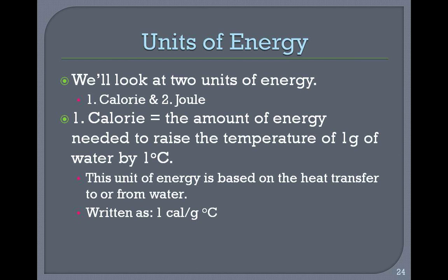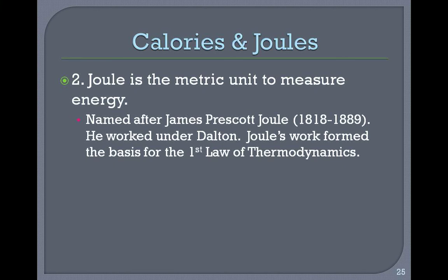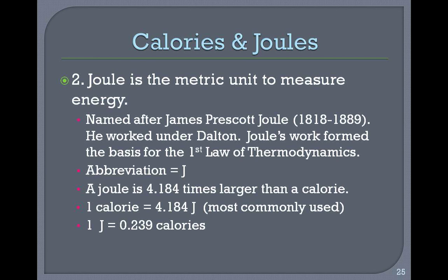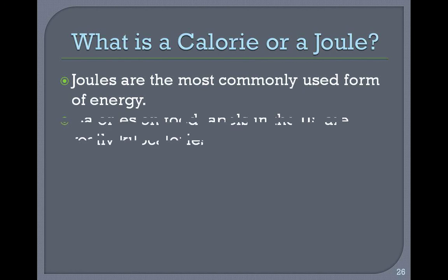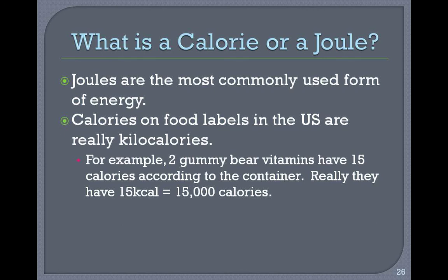Units of energy — we'll look at two: the calorie and the joule. One calorie is the amount of energy needed to raise the temperature of one gram of water by one degree Celsius; this unit is based on heat transferred to or from water, written as one calorie per gram degree Celsius. The joule is the metric unit to measure energy, named after James Prescott Joule, who worked under Dalton. His work formed the basis for the first law of thermodynamics. The abbreviation is a capital J. A joule is 4.184 times larger than a calorie, so one calorie equals 4.184 joules; conversely, one joule equals 0.239 calories. Joules are the most commonly used form, but calories appear on U.S. food labels — and those are really kilocalories.